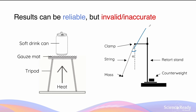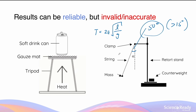What about the pendulum example? If we use an angle of 50 degrees — far bigger than the small angle requirement of 15 degrees — we will produce very invalid and inaccurate results, because the pendulum equation T = 2π√(L/g) can only be used for small angles less than 15 degrees. Using a large angle such as 50 degrees, we can still produce consistent values for the period, but these period values will not be accurate and will not be valid.